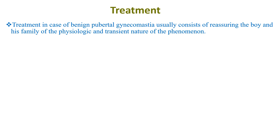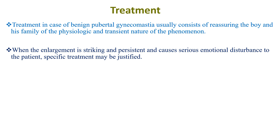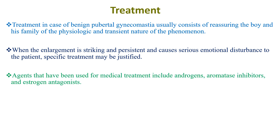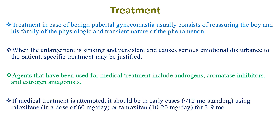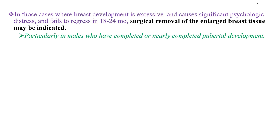Regarding treatment, benign or physiologic pubertal gynecomastia usually requires only reassuring the boy and his family of its physiologic and transient nature. When enlargement is striking and persistent and causes serious emotional disturbance, specific treatment may be justified. Agents used for medical treatment include androgens, aromatase inhibitors, and estrogen antagonists, and if attempted, treatment should begin early — within the first 12 months. Where breast development is excessive, causes significant distress, and fails to regress within 18 to 24 months, surgical removal of the enlarged breast tissue is indicated.